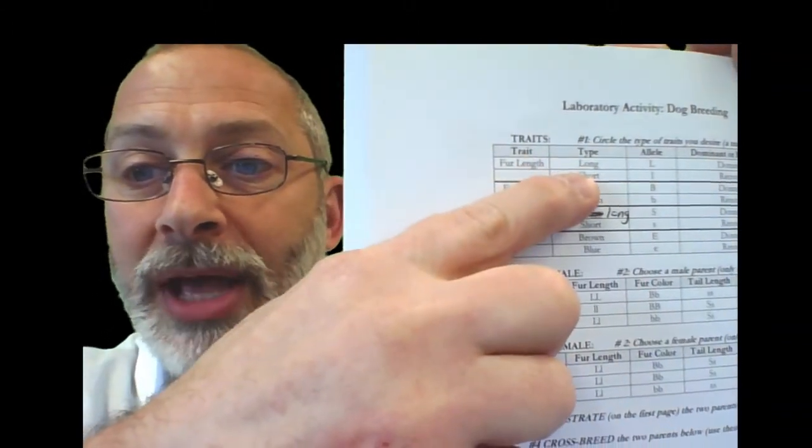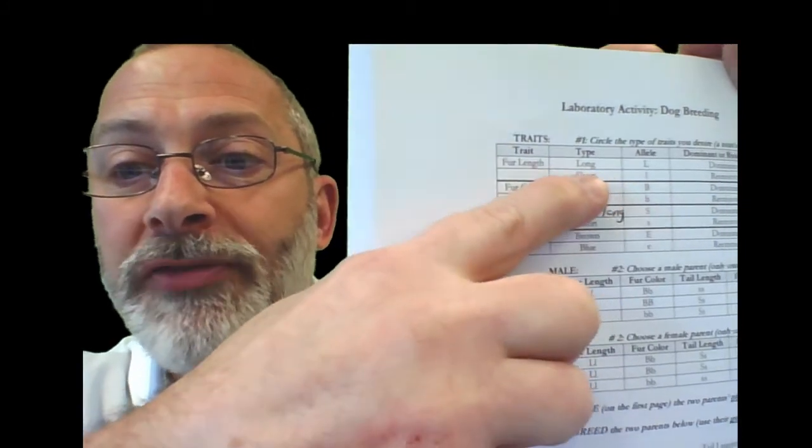Look above. Capital L capital L would refer to a phenotype of a long tail. So using your colored pencils or crayons, for your male, draw a longer tail on your male. Do that for each of the remaining genotypes and phenotypes in order to illustrate what your chosen male and your chosen female would look like based on their genotypes.